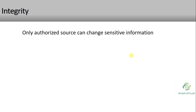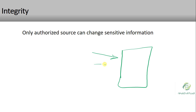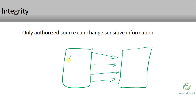The next concept is integrity. Integrity means that any changes to sensitive information or data should come from an authorized source. Our data inside the data center is changing every second, and we must ensure that all changes to that sensitive information are made only by authorized sources.